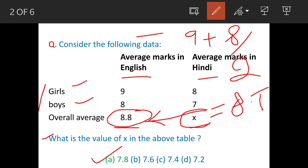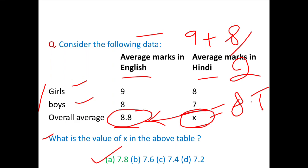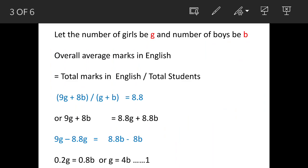Let's assume the number of girls is g and the number of boys is b. The average marks in English equals total marks divided by total students. To get the weighted mean average, we multiply these marks with their respective numbers.